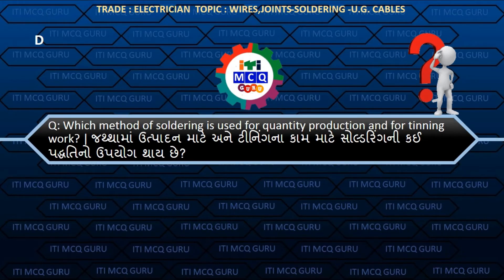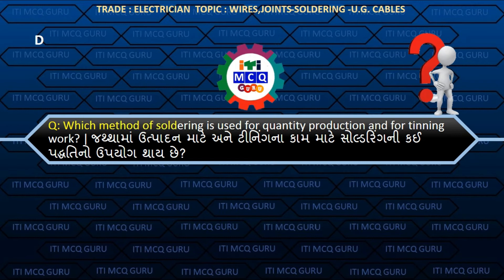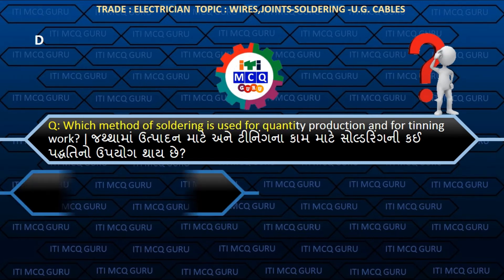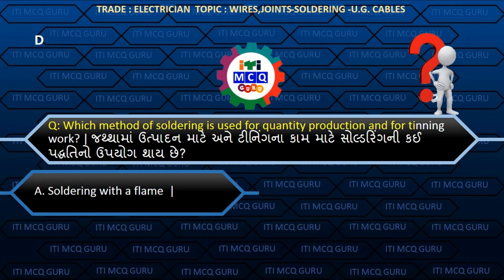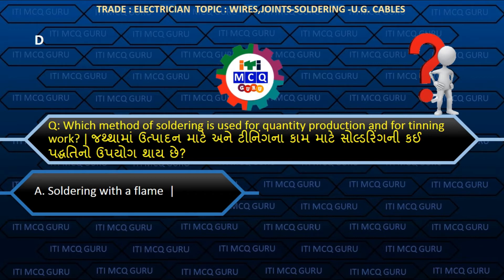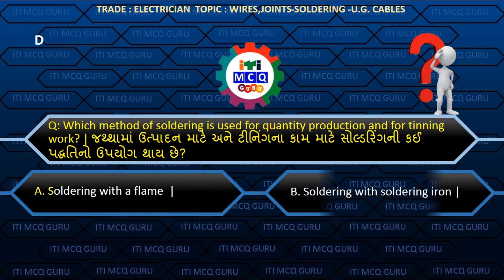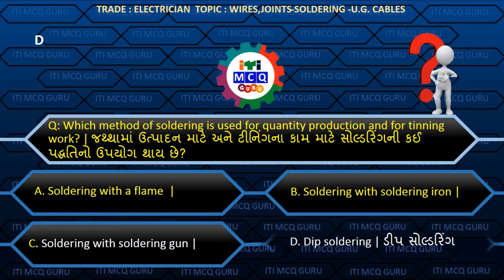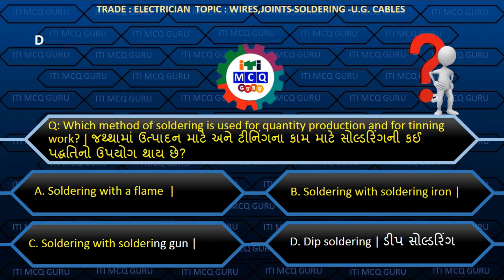Which method of soldering is used for quantity production and for tinning work? (Jathamaa utpadan maate ane tinning naa kaam maate soldering ni kai paddhati noo uphyog thai chhe?) Answer D: Dip soldering.